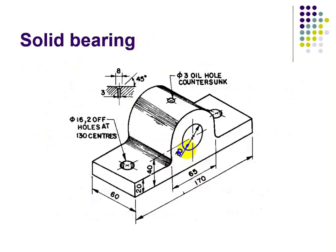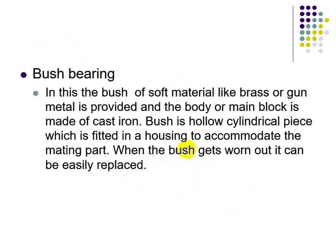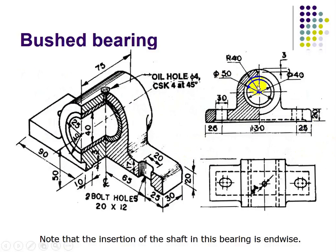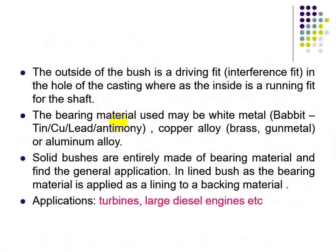The figure shows a solid or journal bearing. In a bush bearing, a bush of soft material like brass or gun metal is provided inside the main block, which is made of cast iron as a hollow cylindrical piece fitted in the housing. When the bush gets worn out it can be easily replaced. The outside of the bush is a driving fit in the hole of the casing, while the inside provides a running fit for the shaft. Applications include turbines and large diesel engines.